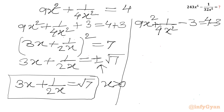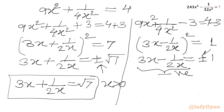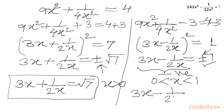Because x is positive, subtracting 3 from both sides of 9x² + 1/(4x²) = 4 gives (3x minus 1/(2x))² = 1. Taking the square root, 3x minus 1/(2x) = ±1. Since x lies in (0,1), 3x minus 1/(2x) is always negative, so we accept the negative sign: 3x minus 1/(2x) = -1.